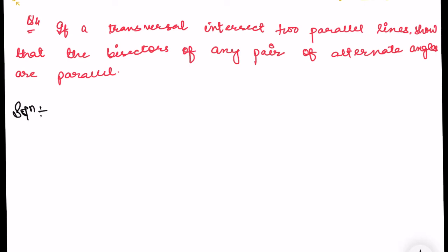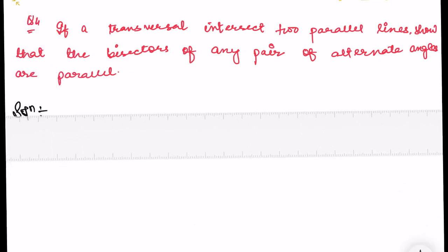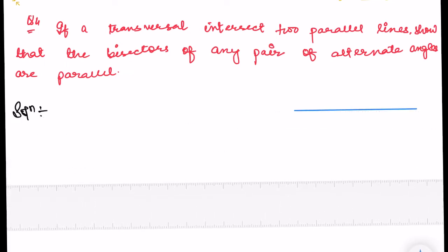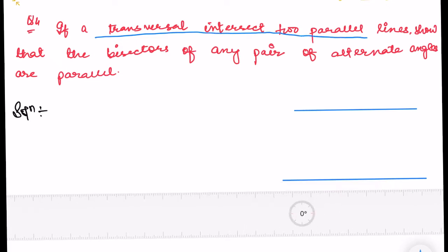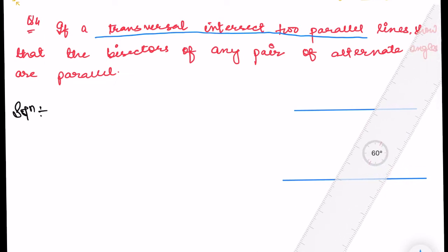So let me draw. First let me draw two parallel lines. This is one parallel line and another parallel line. If a transversal intersects any two parallel lines — so there is a transversal which intersects these two parallel lines.